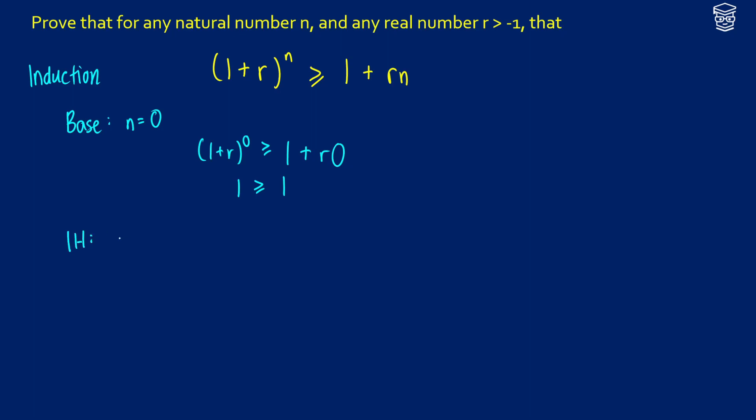Now for the inductive hypothesis we're going to say that n equals k is true, and what we want to do is prove n equals k plus 1 is also true. To do that we're going to recognize that 1 plus r to the k plus 1 is just the same thing as 1 plus r to the k times 1 plus r.